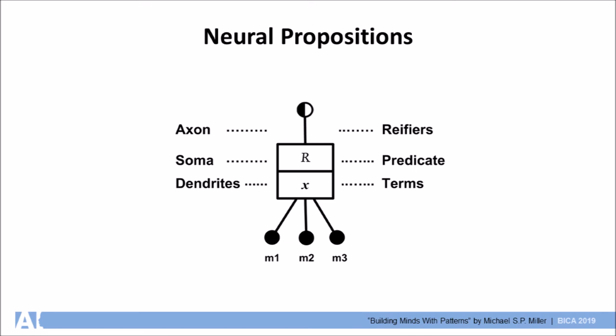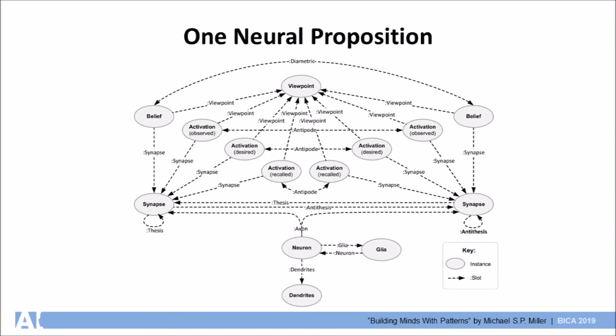A neural proposition can be thought of as both a neuron and as a logical proposition. Viewed as a neuron it has dendrites which hold the terms of the symbolic relationship.